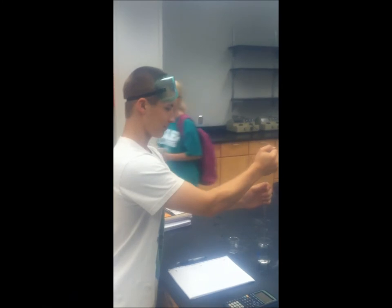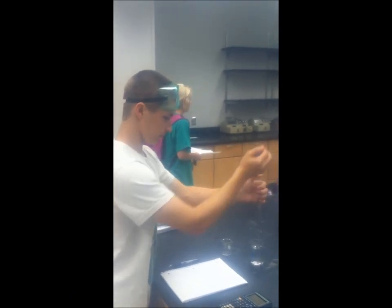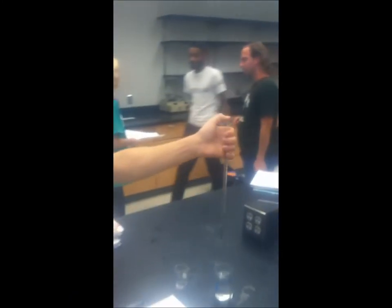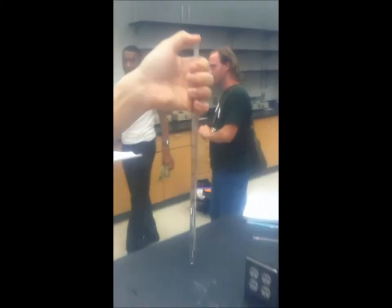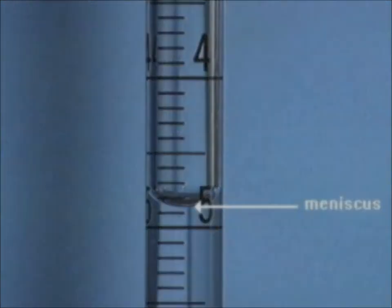The first thing you're going to want to do is draw water into the pipette from the main beaker and get a measurement from the bottom of the meniscus. A meniscus forms because polar molecules in the glass and water are attracted to each other, therefore the water tends to cling to the sides of the pipette. You should always read the measurement of the volume from the bottom of the meniscus.